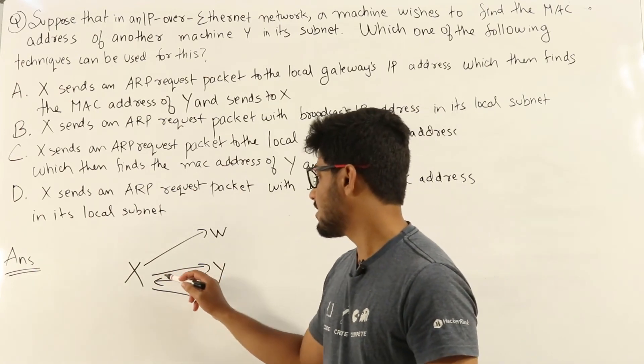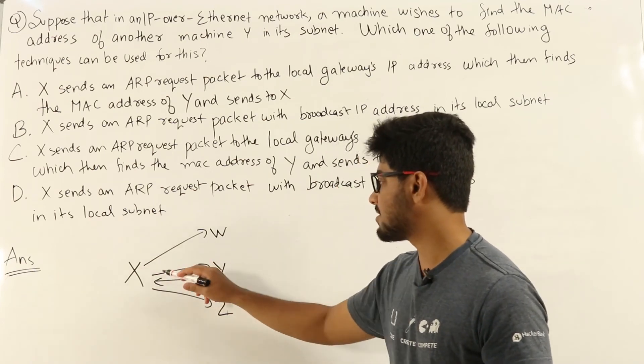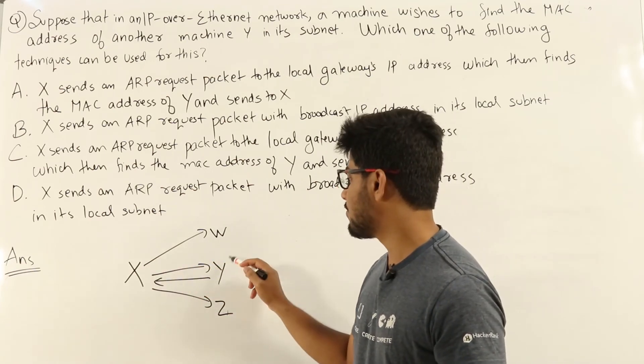So, Y will reply back, hey, this is my MAC address. That will be the ARP response. So, X will be broadcasting this message throughout its subnet and only Y will be replying back. That's how X will get back Y's MAC address.